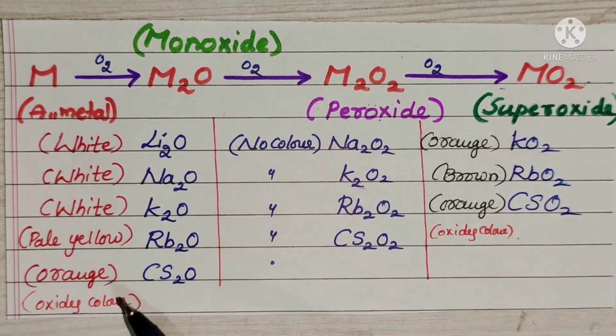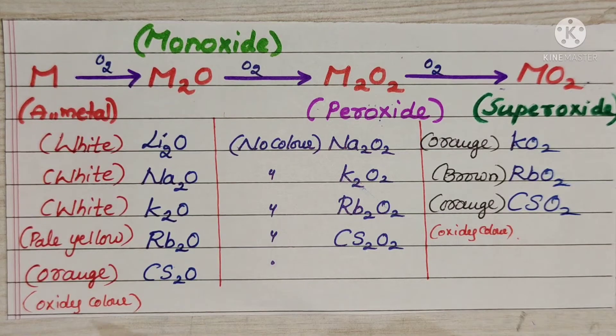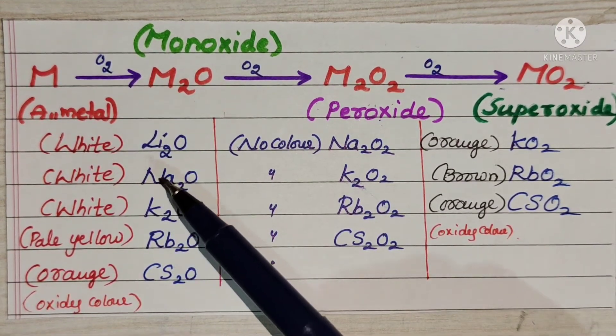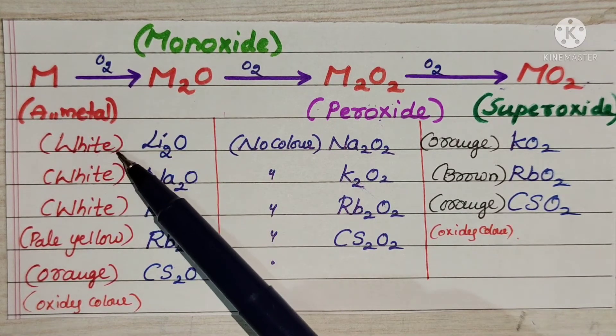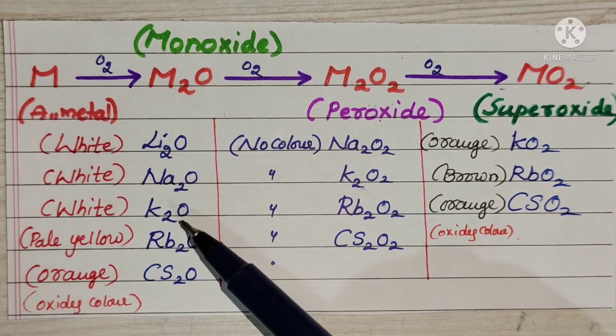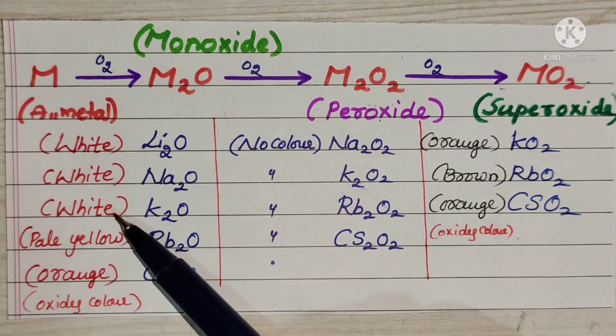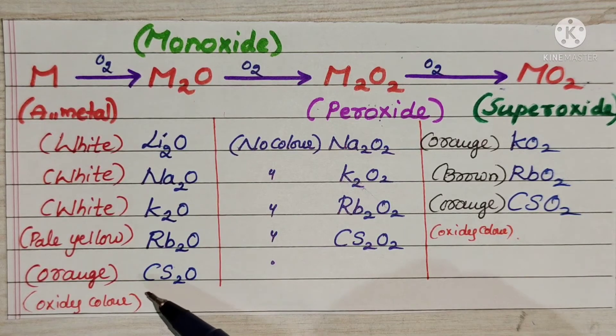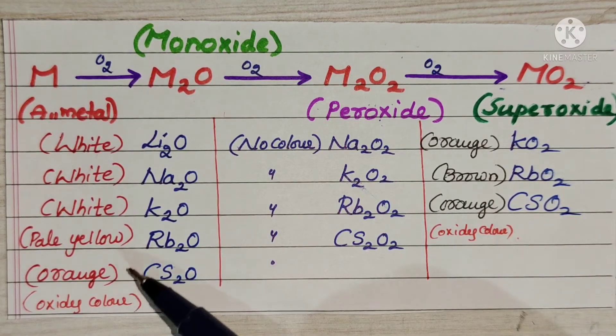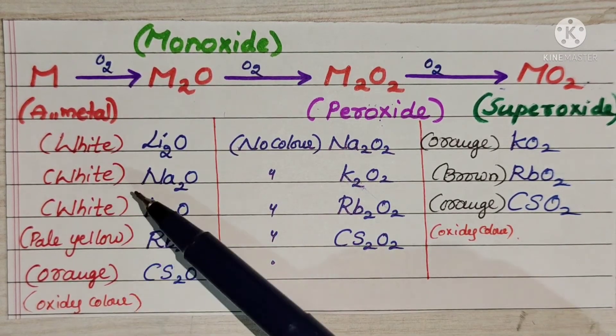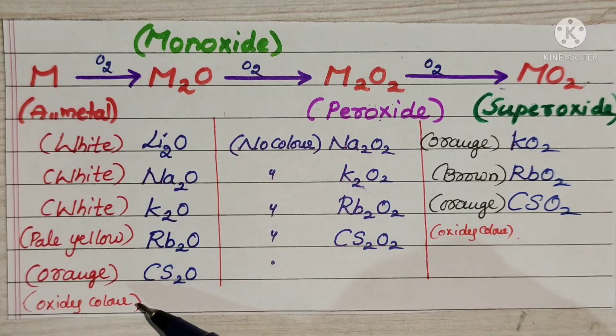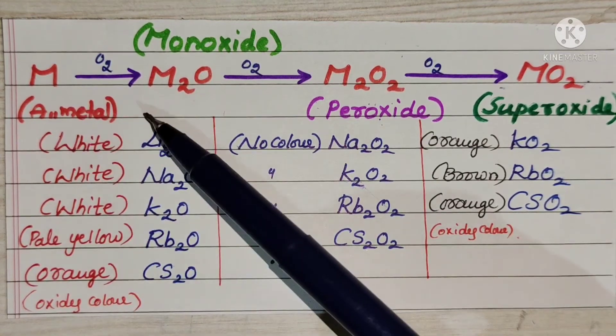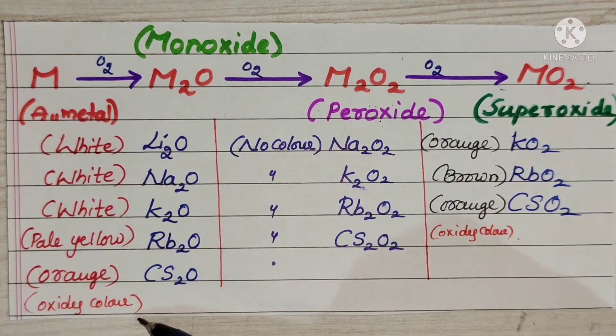Based on the oxide's color we may identify the given oxide. Lithium monoxide gives white color. Sodium monoxide white color. Rubidium monoxide pale yellow color. Cesium monoxide orange color. Based on these colors we may identify the given alkali metals oxides. This first part completely belongs to monoxide. All these have M2O formula.